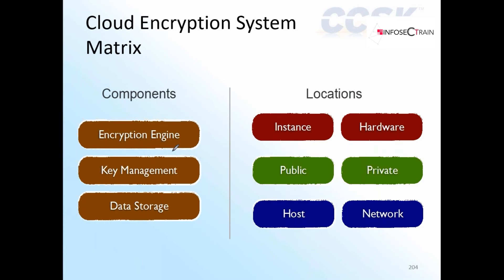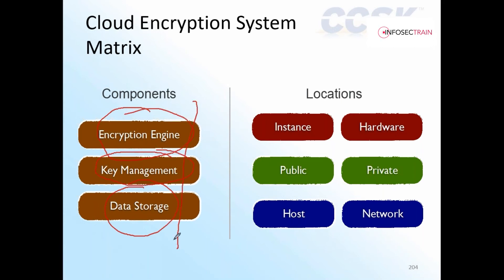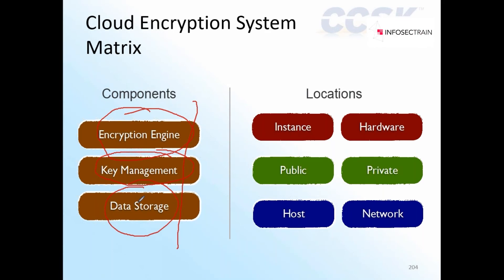For encryption there are three components to consider: the data itself, the encryption engine or algorithm, and the key file. Each of these components can be positioned in different locations — inside a virtual machine, on dedicated hardware, in a public or private cloud, or in a key management service. We can deploy these components anywhere we want.